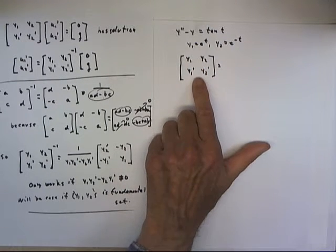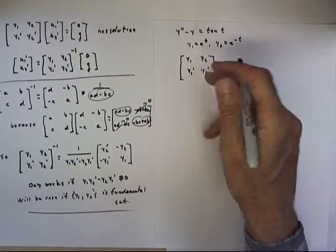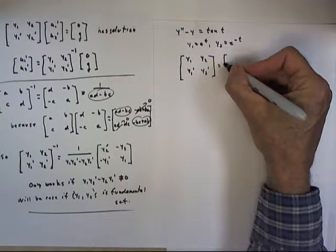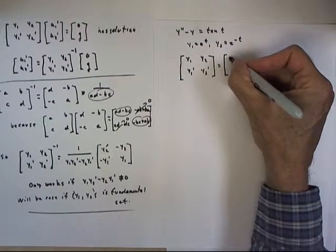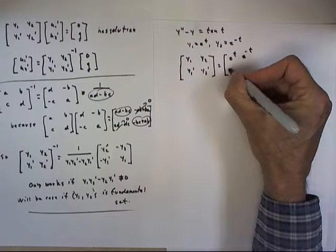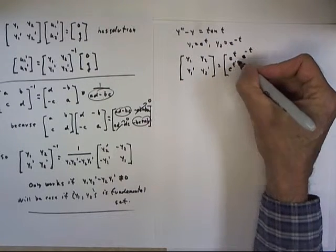So we move immediately to this determinant, y1, y2, y1 prime, y2 prime. And that determinant to the matrix y1, y2, y1 prime, y2 prime. And that equals e to the t, e to the negative t, and y1 prime being the derivative of e to the t is e to the t.